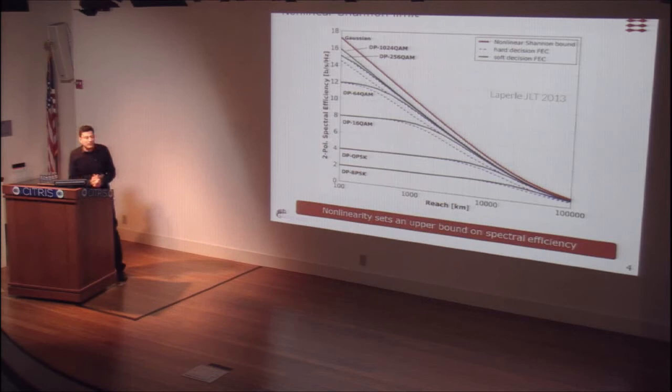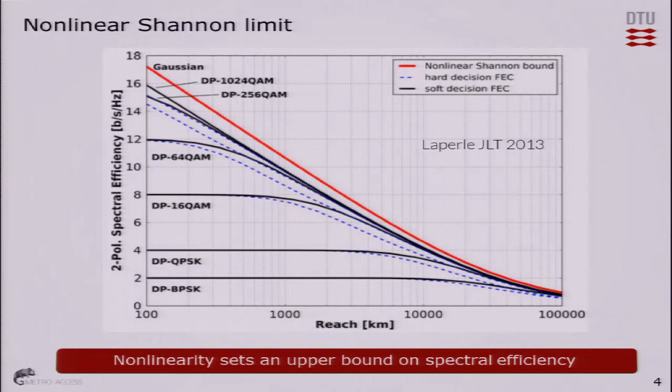One of the dominating charts in the literature is the non-linear channel. If we plot achievable spectral efficiency in bits per second per hertz as a function of distance, it decreases due to impairments in the fiber. Non-linearity sets an upper bound on spectral efficiency. In order to move the system forward, we need to know how to model and predict system impairments.